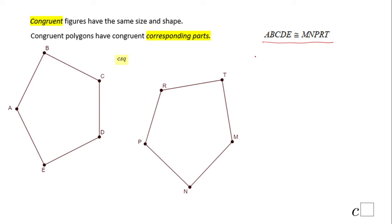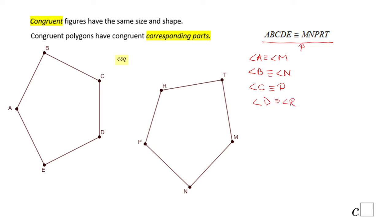For example, angle A is congruent to angle M, angle B is congruent to angle N. Looking just at this statement — A is in the first position, M around the first position, B in the second. Angle C is congruent to angle O, and angle D is congruent to angle R.